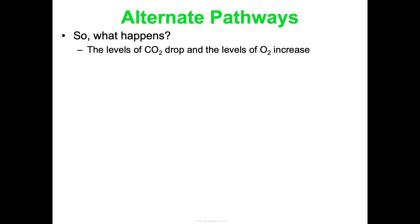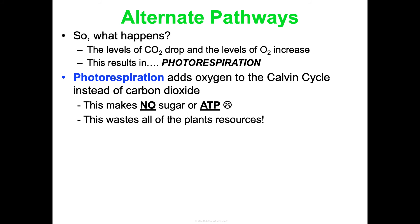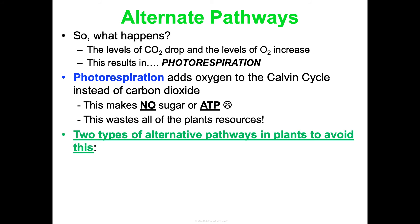When stomata close, levels of CO2 drop because CO2 can't get in, and oxygen levels increase because it can't get out. This causes photorespiration, where oxygen gets added into the Calvin cycle instead of carbon dioxide. That means the plant can't make sugar, which means consumers can't eventually get ATP from that sugar — so this wastes the plant's resources. To avoid this, some plants use alternative pathways when closing their stomata: the CAM pathway and the C4 pathway.